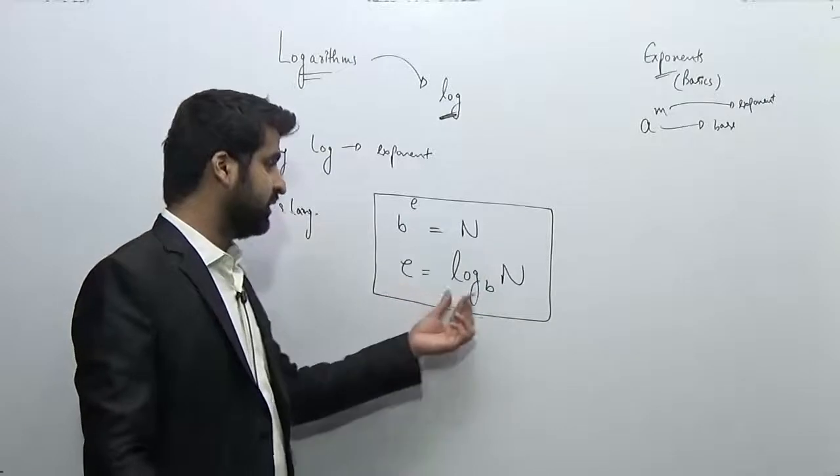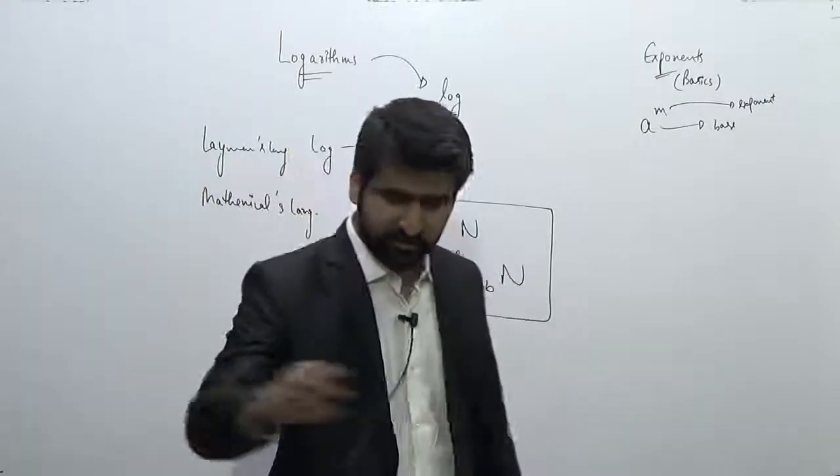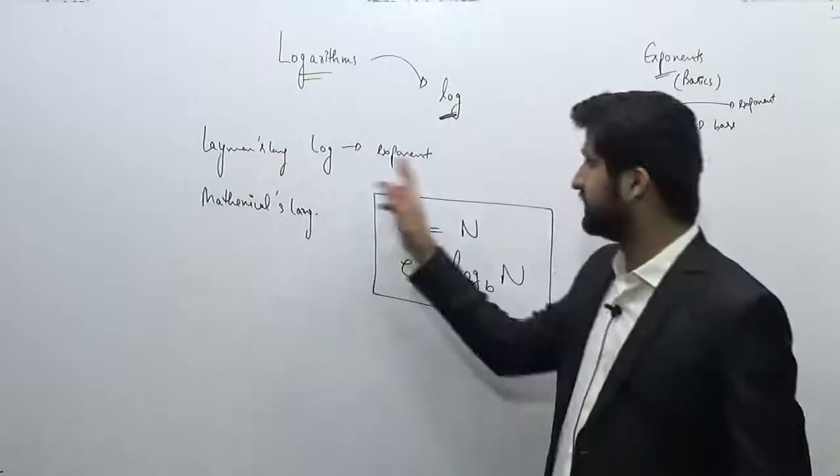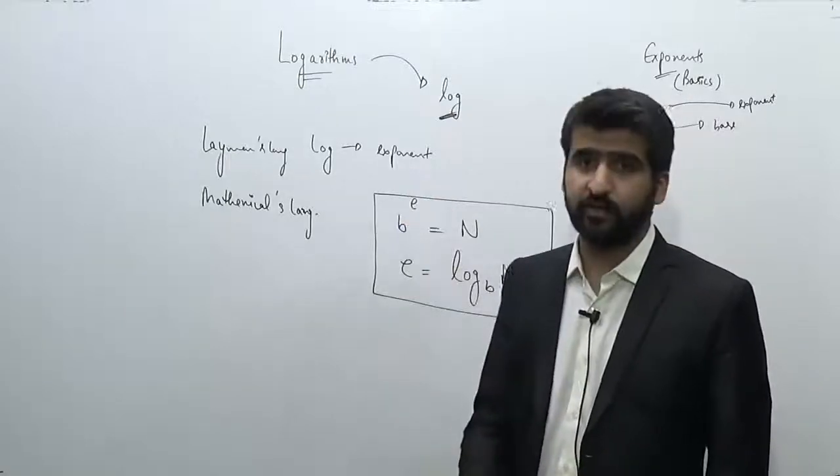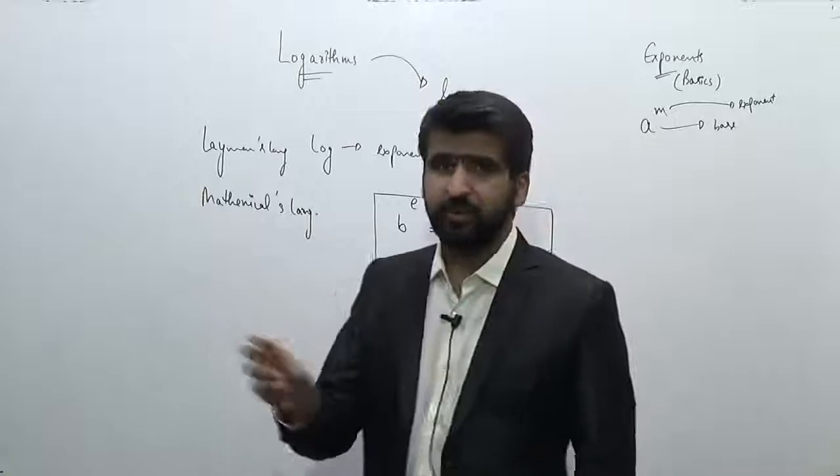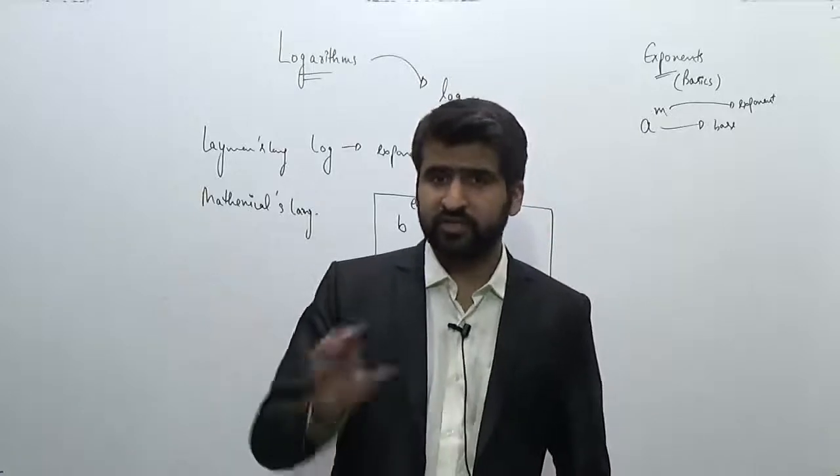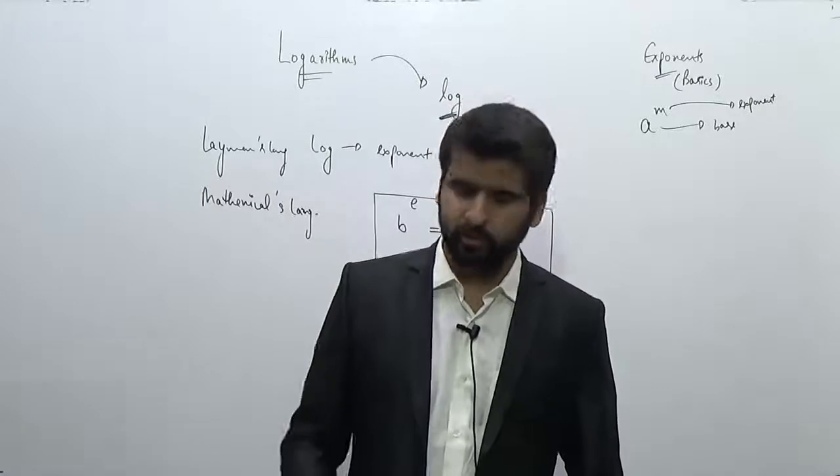So that's the basic definition. And in the layman's language, you can say that this is just nothing but the exponent, or we can say that this is an unusual exponent which we need to find out, which cannot be found by simply logically or just by analyzing. What cannot be? Like 2 to the power x is equal to 64.